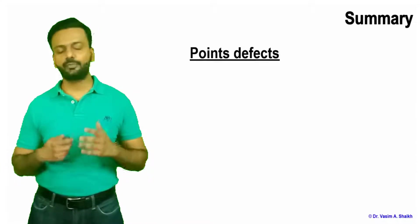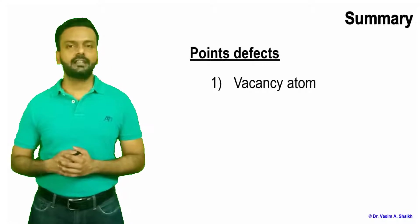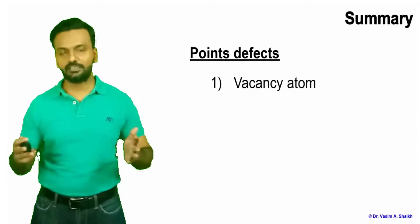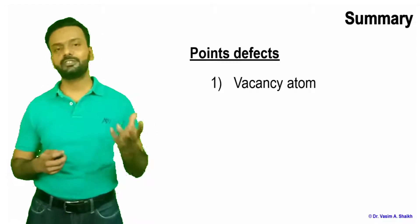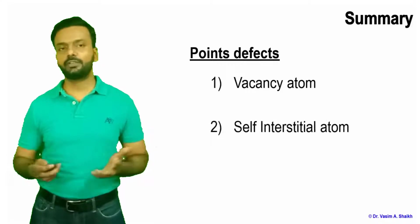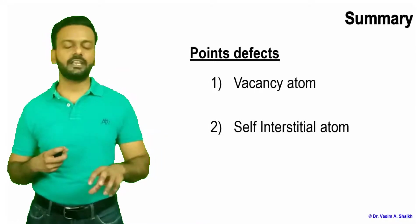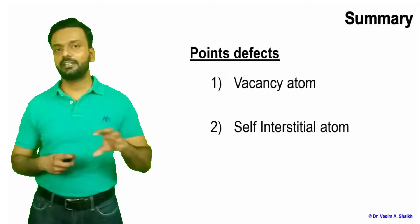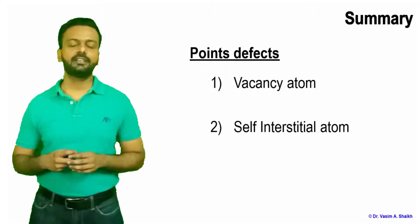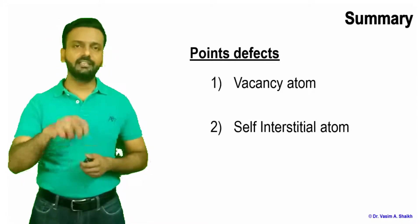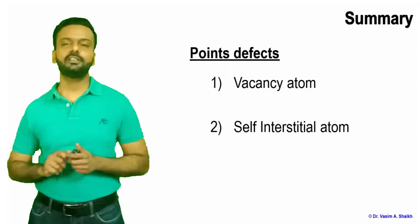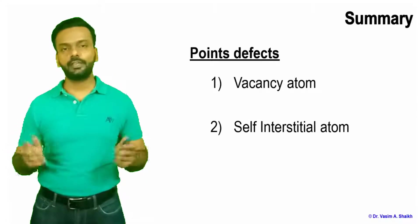To summarize: we have talked about point defects, specifically vacancy — where a normal crystal site is empty and the atom is missing — and self-interstitial atom, where the same atom of the crystal structure goes into an interstitial site, creating distortion and localized stress. We also discussed that sometimes we deliberately put point defects or imperfections in the material to get specific properties, like alloying and doping. I hope you liked the video; please subscribe to my channel, like, and share it with your friends. Thanks for watching.